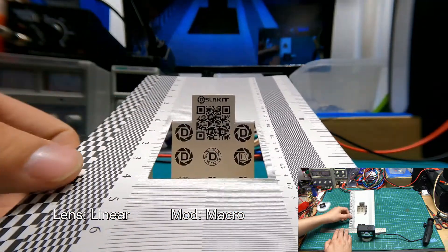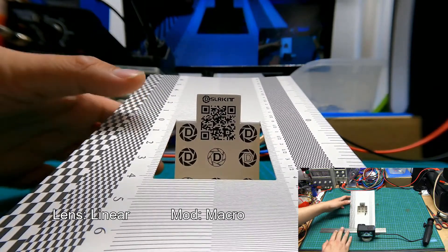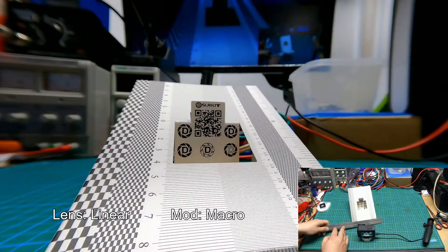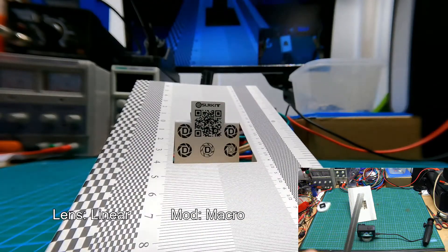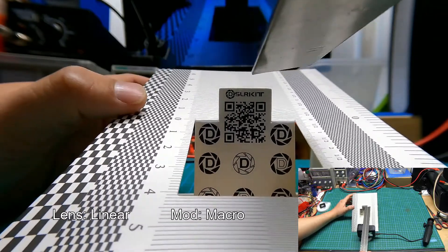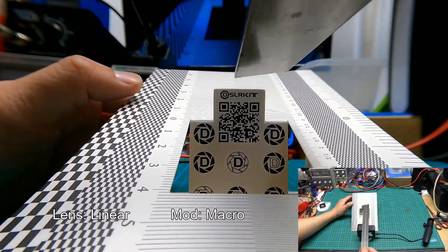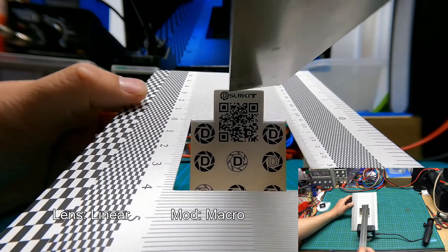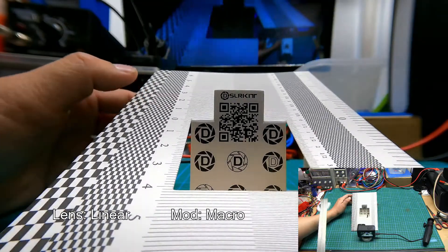So this is a quantitative test using at least some kind of a standard. But I do want to do some empirical tests. Just for final reference, the distance is about 10 centimeters. 10 centimeters from the lens to the test card.